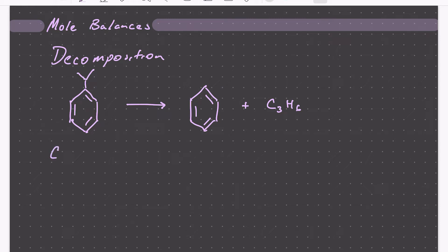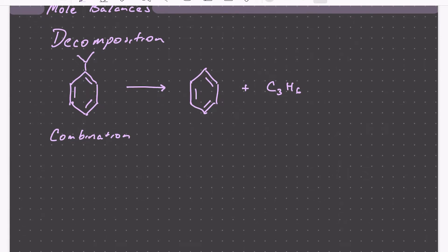Conversely, we could have combination-type reactions where A is reacting with some other species and combining to form a product. In this case, if our molecule A is ethylene, it could combine with another reactant like hydrogen to form a saturated hydrocarbon, in this case ethane.